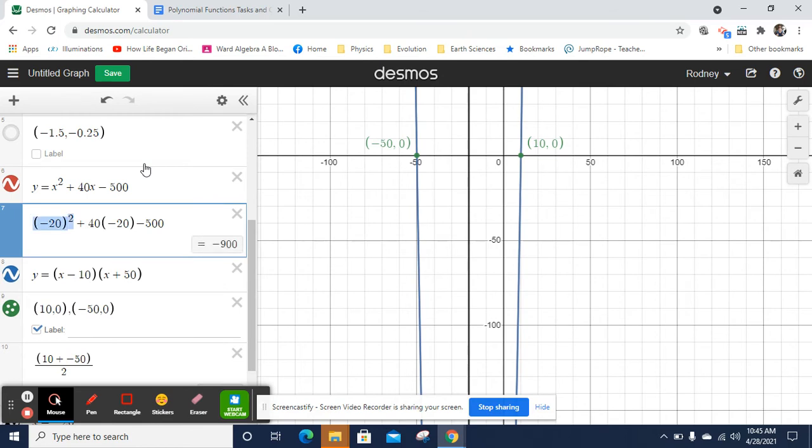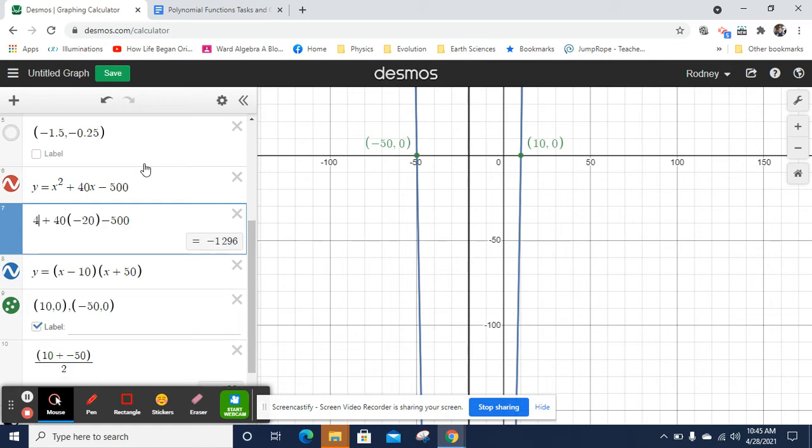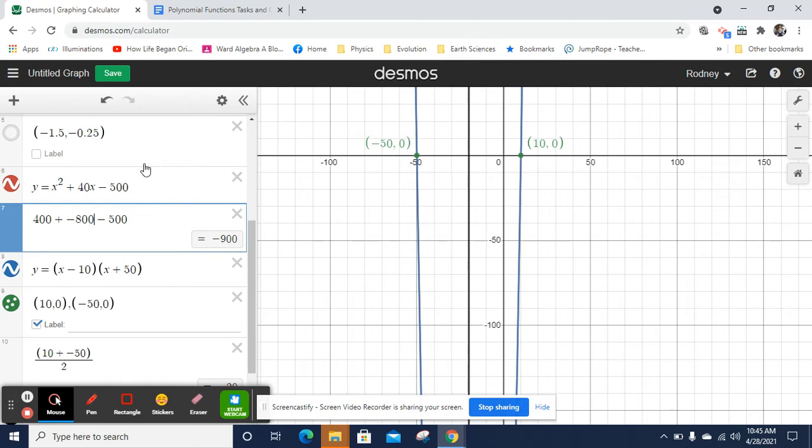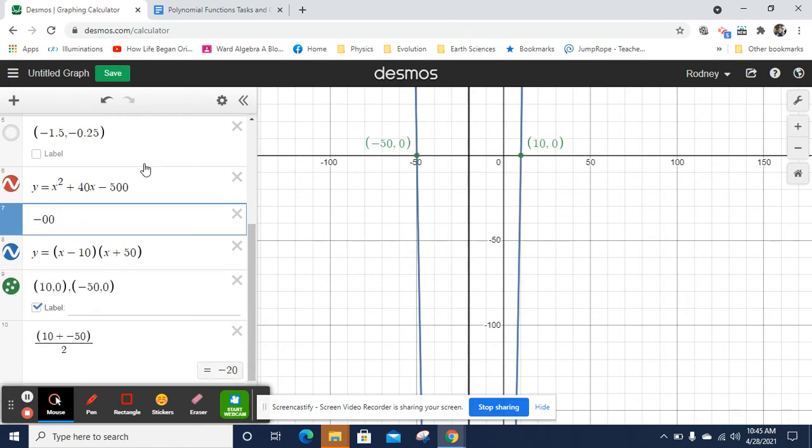Negative 20 squared is 400. Negative 20 times 40 will be negative 800. And then it's minus 500. So 400 minus 800 will be negative 400. And negative 400 minus 500 will be negative 900.